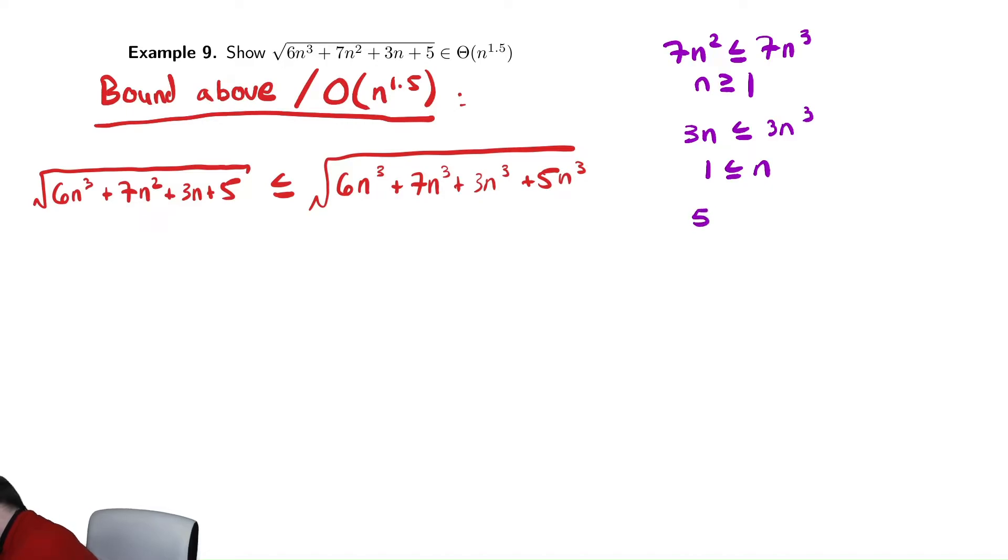We also said that 5 was less than or equal to 5n cubed, which again gives me n greater than or equal to 1. Notice this pattern: when using this technique, we expect these nice small values for n naught. Other choices will lead you to different values of n naught and different values of c.